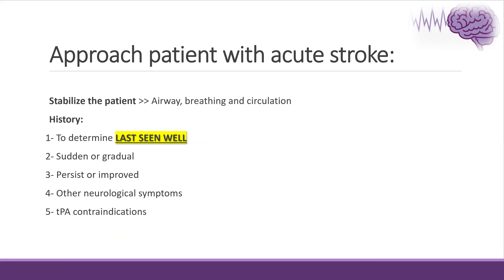We make sure of the stability of the patient. We should take a focused history about the last time the patient was seen well — this is the most important question. It's not about the symptom onset. Sometimes a patient wakes up at 5 a.m. with symptoms, so the last seen well is the time before the patient went to sleep. After that: is it sudden or gradual? Is it persistent or improved? Is there any TPA contraindication?